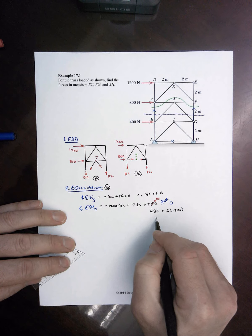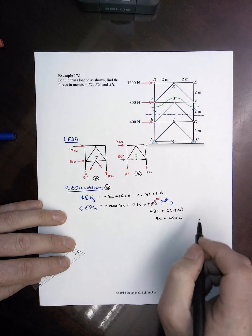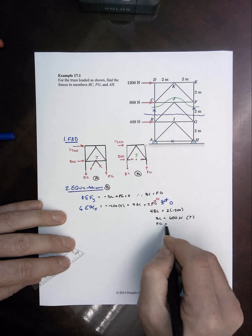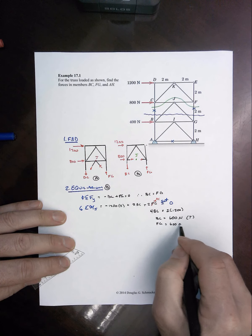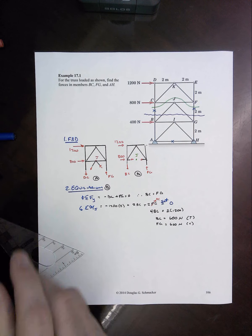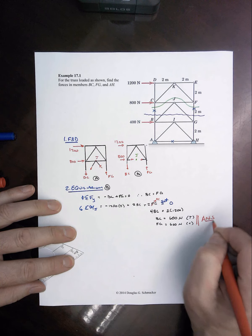And of course, we have 4BC is now equal to 2 times 1,200. And of course, that means BC is equal to 1 half of the 1,200 or 600. We are in newtons. BC was shown in tension. FG then is equal to 600 newtons, but it is shown in compression. And that's at least two of our answers that were requested.